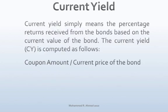Current yield is simply the percentage of return received from the bond based on the current value of the bond. Current yield is computed by dividing the current price of the bond into the coupon amount. The coupon amount is the dollar amount of interest the investor is receiving from the bond.